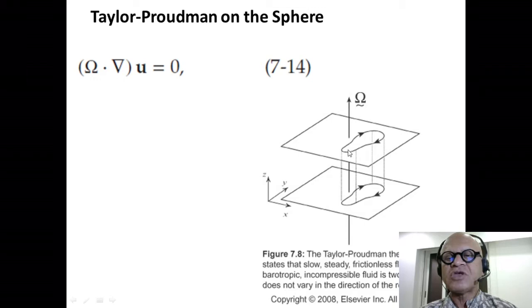This was the idea that parallel to the rotation vector, the fluid was basically two-dimensional. You couldn't have vertical variations. As you remember in the water tank experiment, a hockey puck was put at the bottom and the flow had to go around as if the hockey puck extended all the way to the surface.